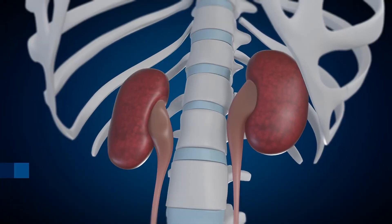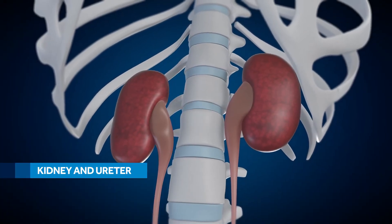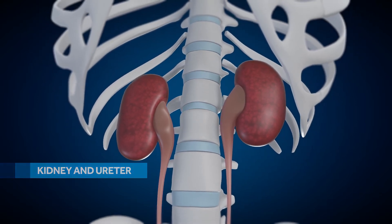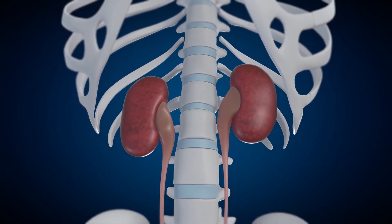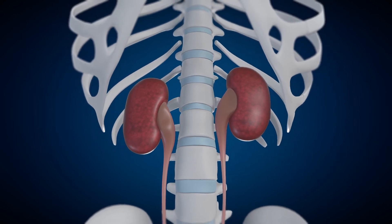Kidneys and ureters are part of the urinary system that delivers urine to the bladder. A concern for retroperitoneal procedures is location of the kidneys and ureter and potential injury.